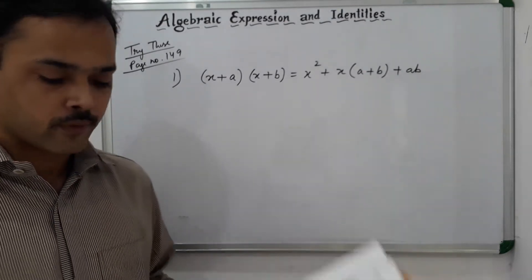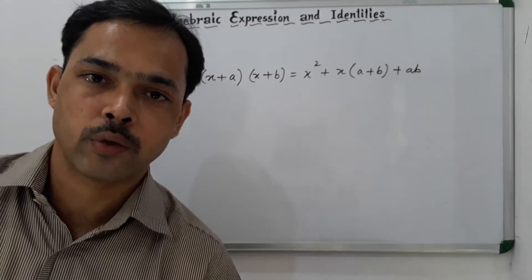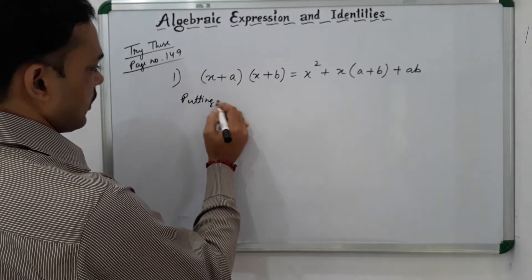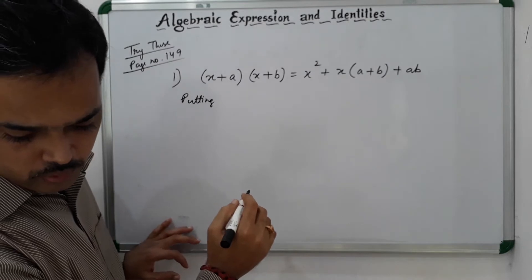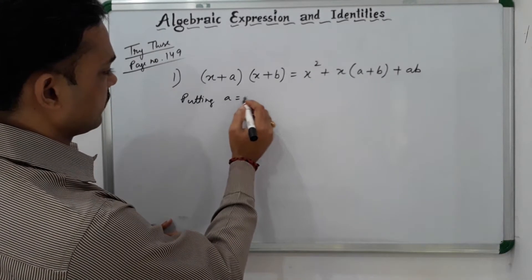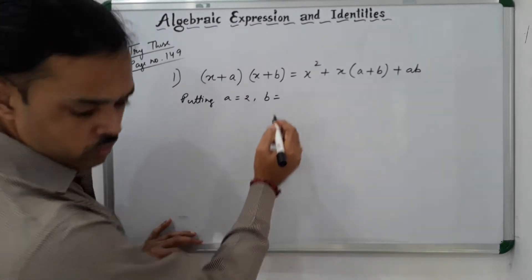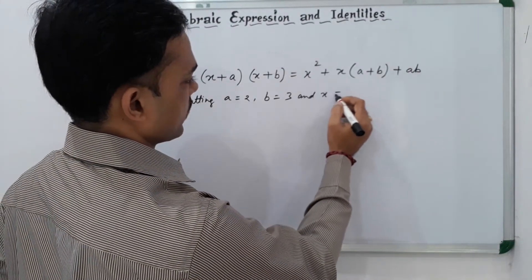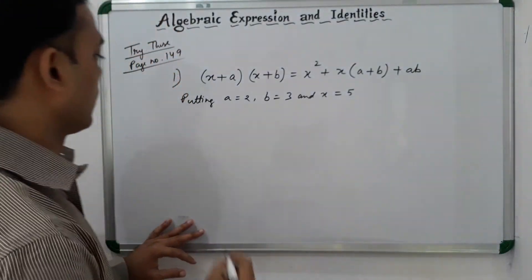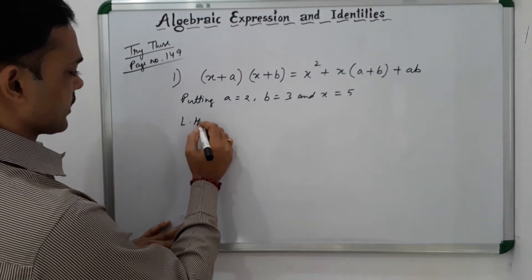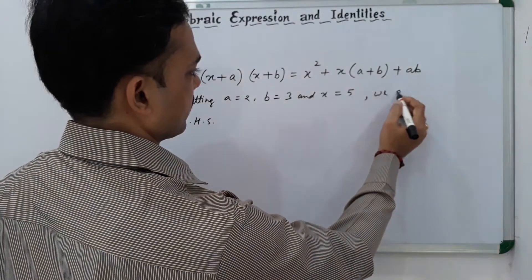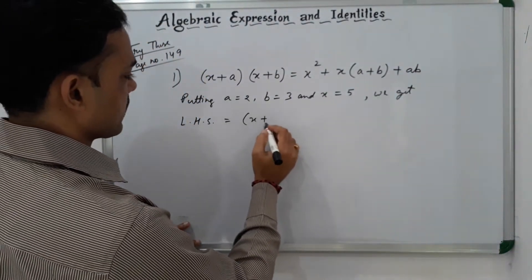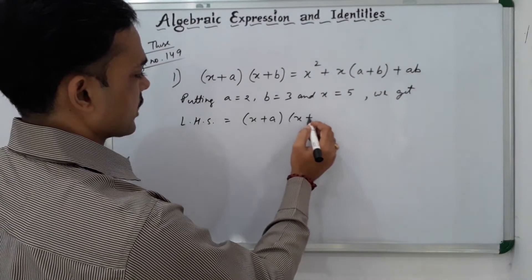Here we have to verify by putting the given values: A equals 2, B equals 3, and X equals 5. Let us first take LHS. LHS is (x + a)(x + b).